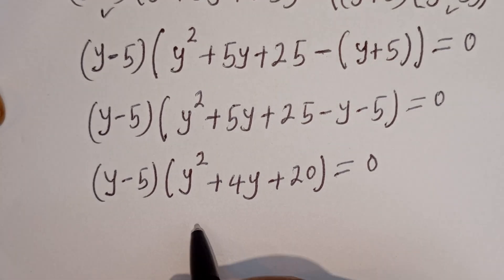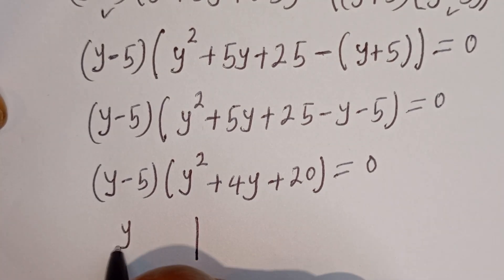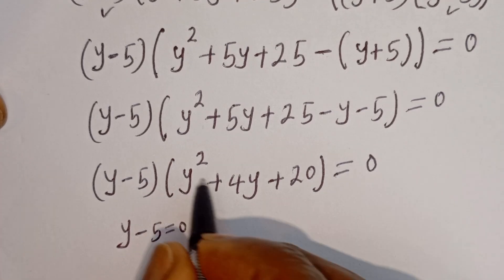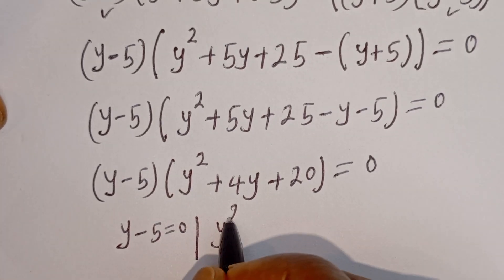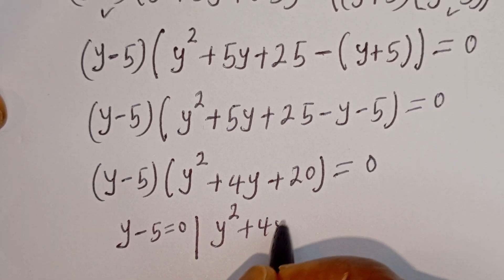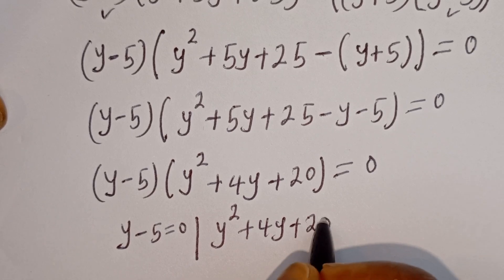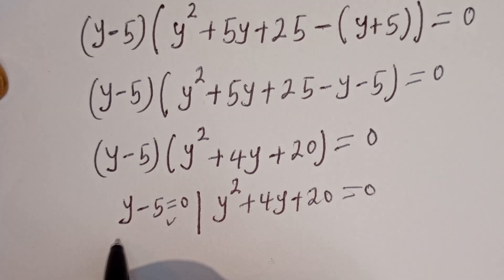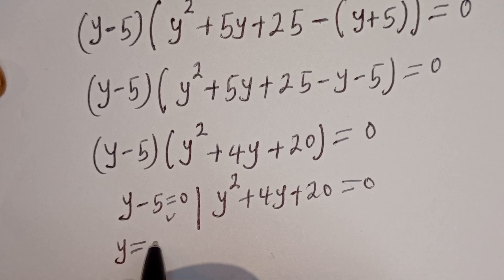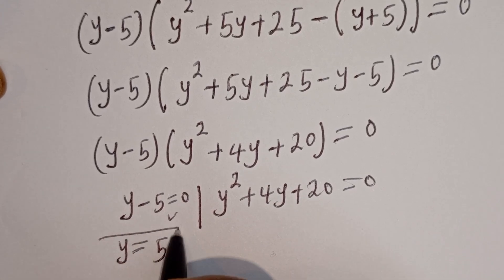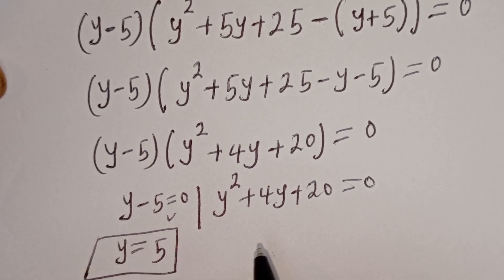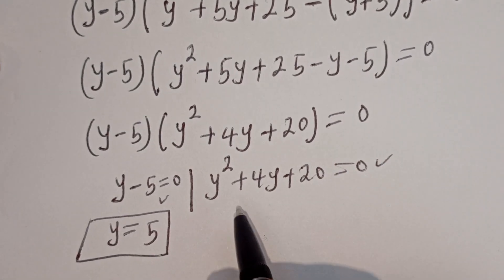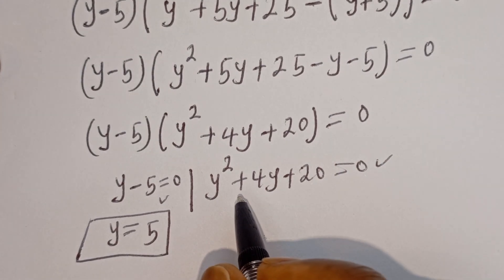There are two cases. The first case is y minus 5 equal to 0, and the second case is y squared plus 4y plus 20 equal to 0. From the first case, y is equal to 5 — this is the first value of y. From the second case, this is a quadratic equation, so let's solve it using the quadratic general formula.